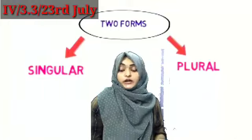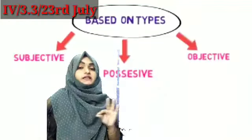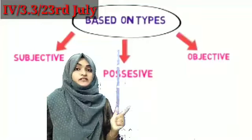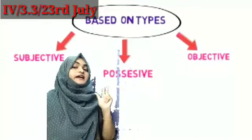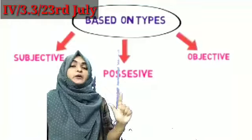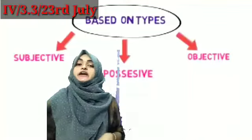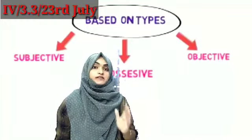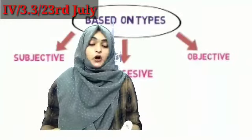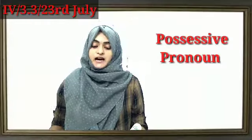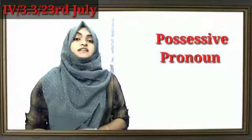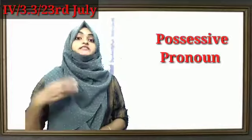This personal pronoun is divided into three types: subjective, possessive, and objective. Today we are going to learn about possessive pronoun. A possessive pronoun tells us that something belongs to someone.